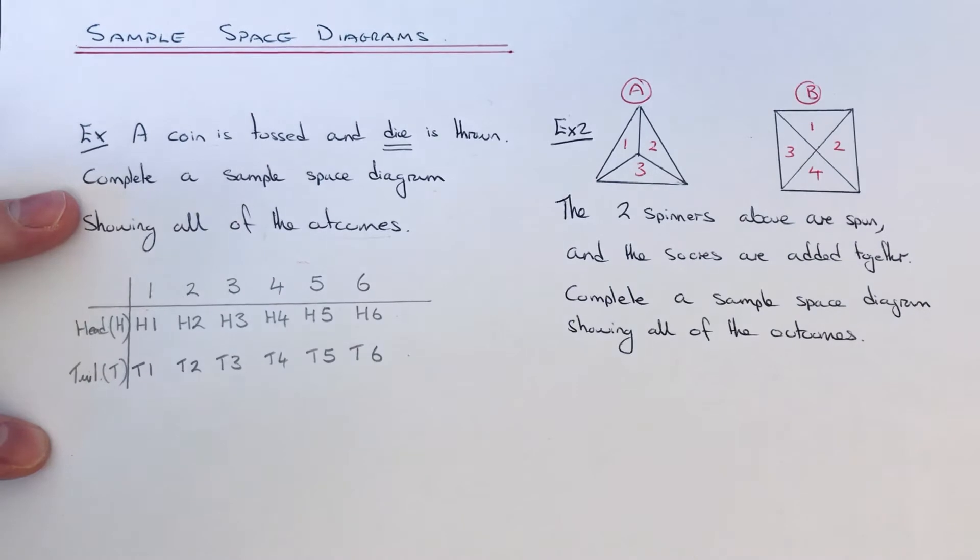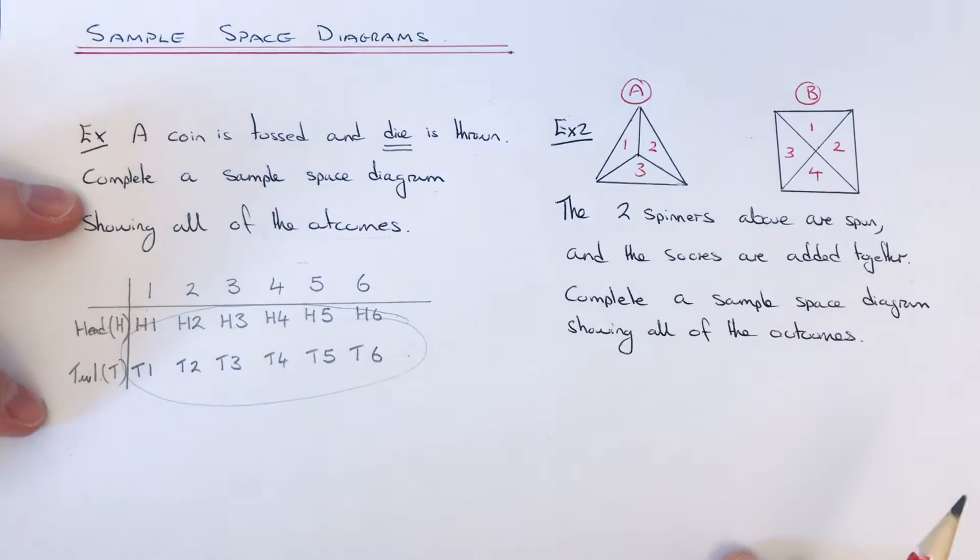That's our sample space diagram completed. This is useful if you get an extra question like, what is the probability of getting a head and a 3? As you can see, all together in this table we have 12 outcomes, so it'd be 1 out of 12.